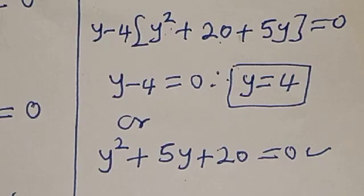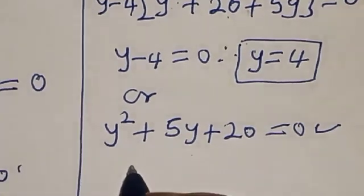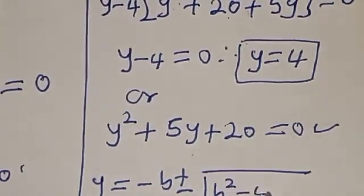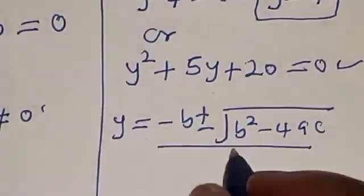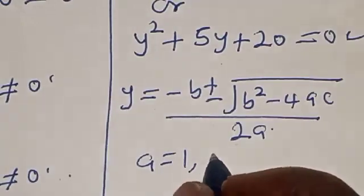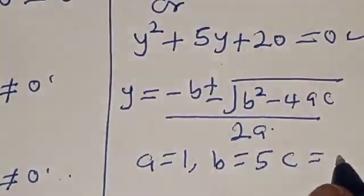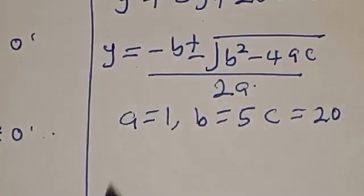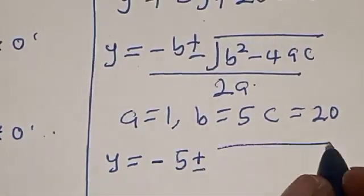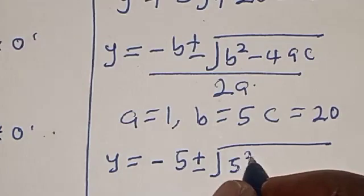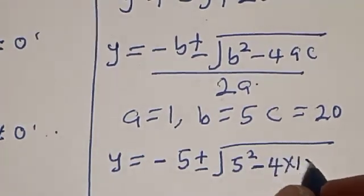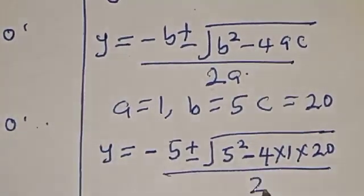This is a quadratic equation which can be solved using the quadratic formula: y equals negative b plus or minus square root of (b squared minus 4ac), divided by 2a. Here a equals 1, b equals 5, c equals 20. So y equals negative 5 plus or minus square root of (25 minus 80), divided by 2, which gives y equals negative 5 plus or minus square root of negative 55, divided by 2.